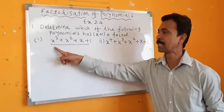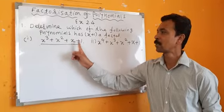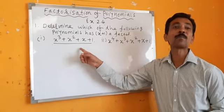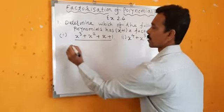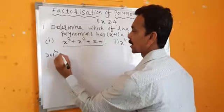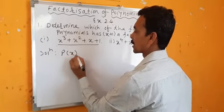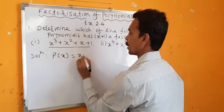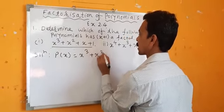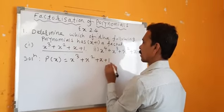We will see the first sum. It is x cubed plus x squared plus x plus 1. This is P of x. So, P of x is equal to x cubed plus x squared plus x plus 1.